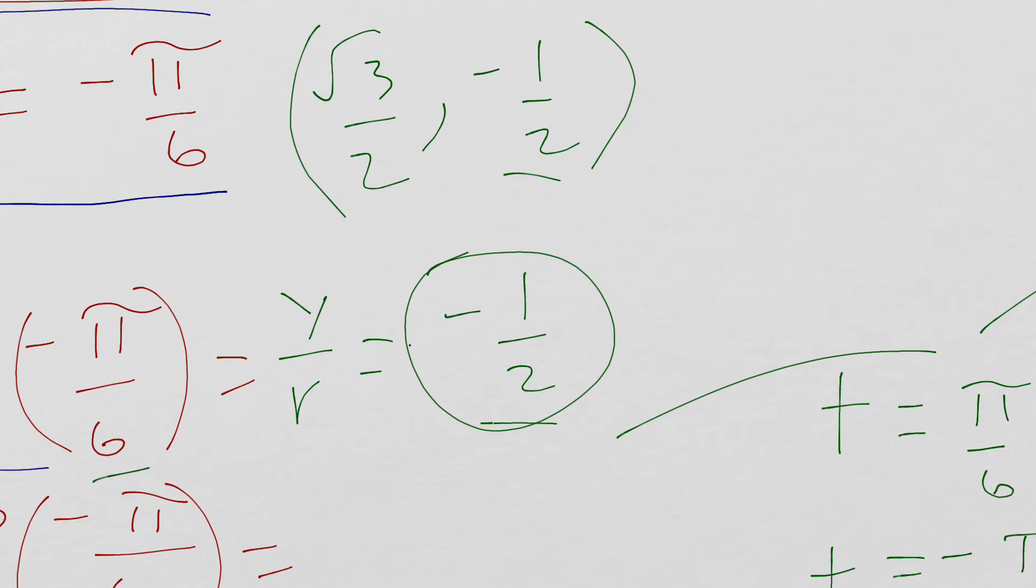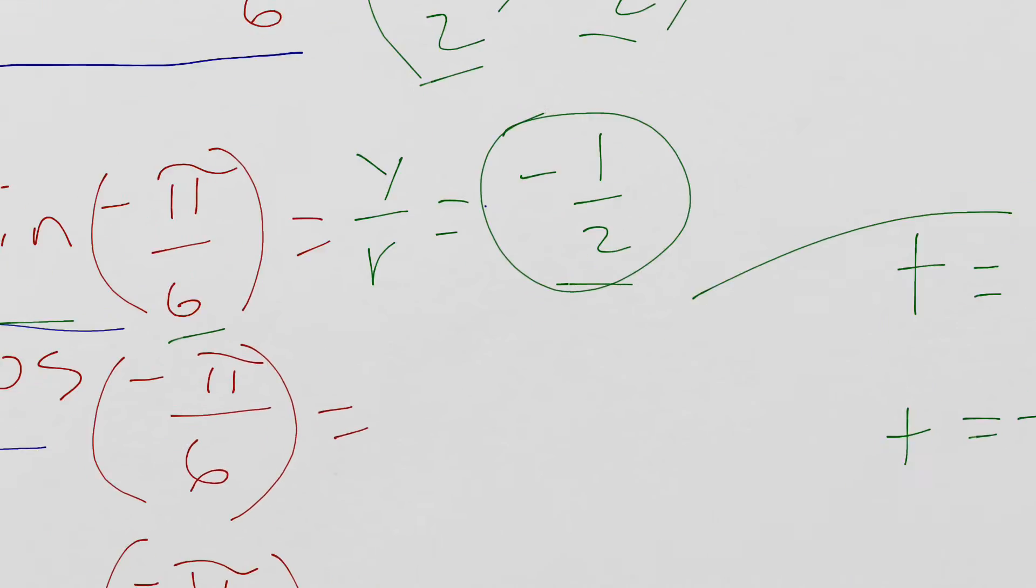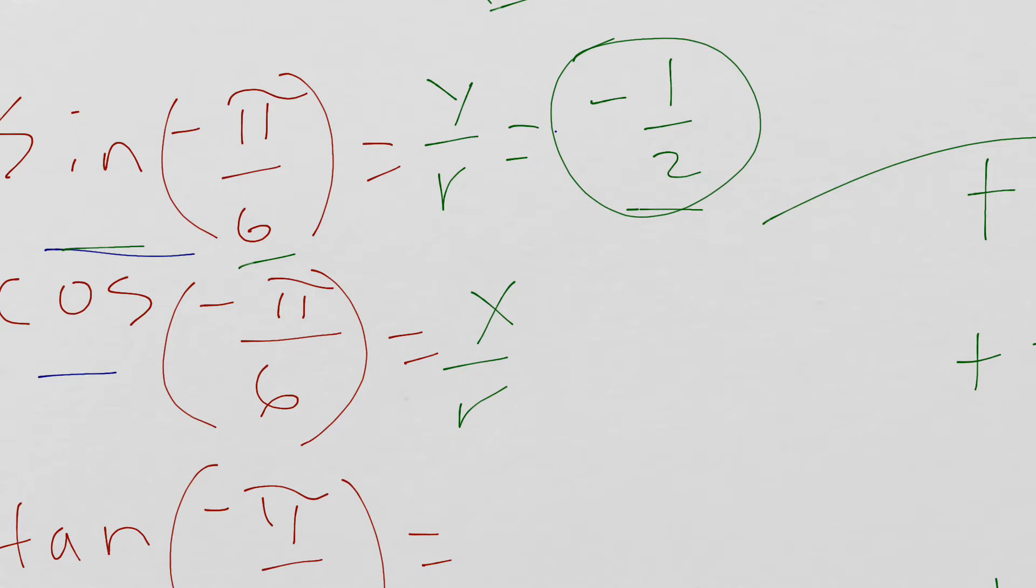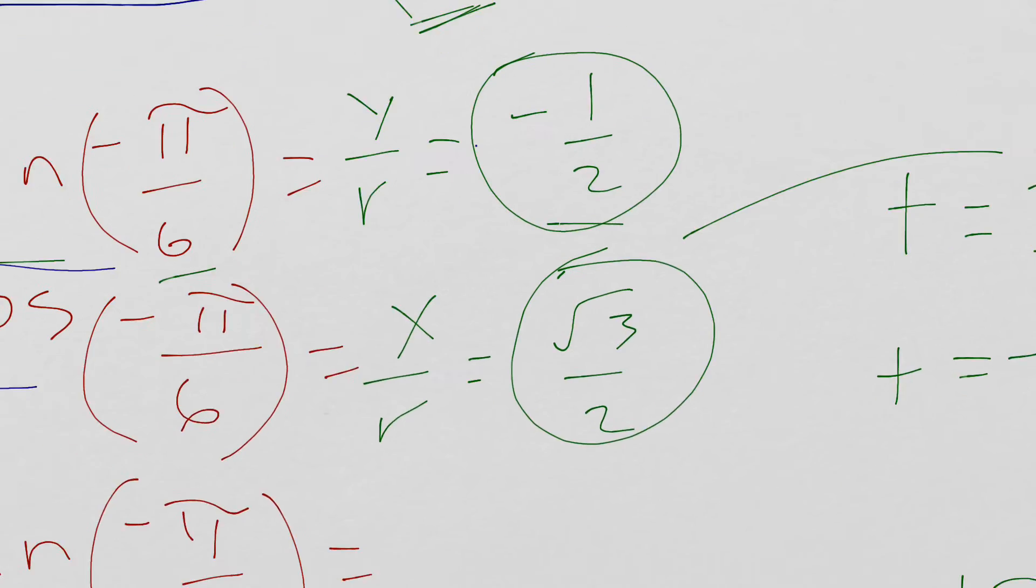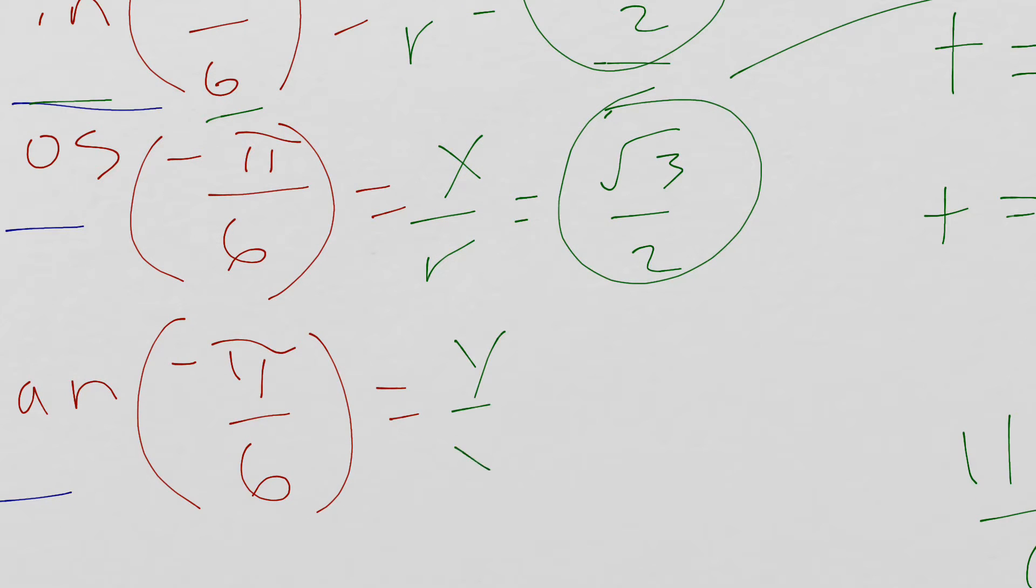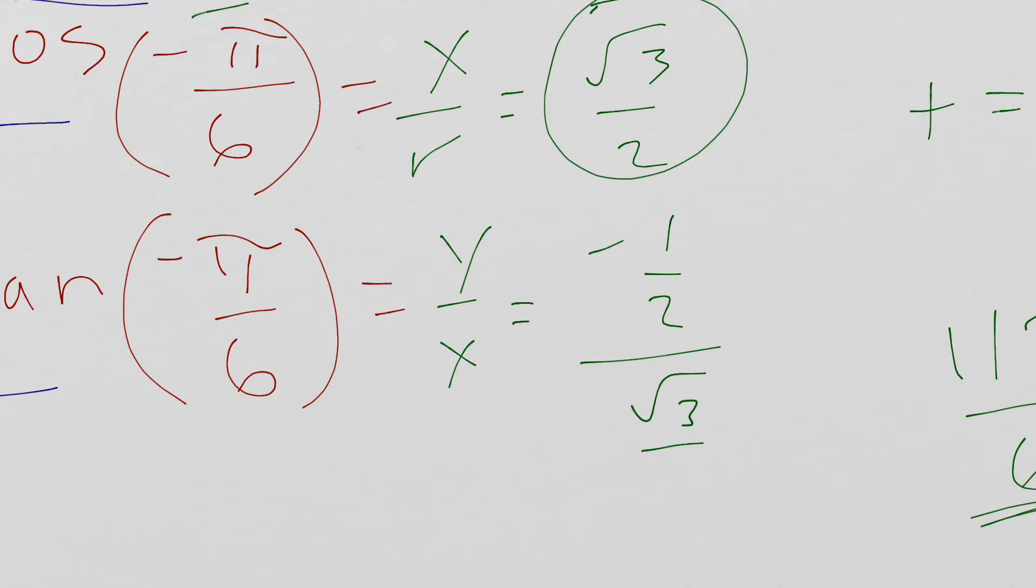Cosine of negative pi over 6, x over r, square root of 3 over 2. Tangent. We're going to do some calculation here. Tangent is the y over the x. So negative 1 half over square root of 3 over 2.